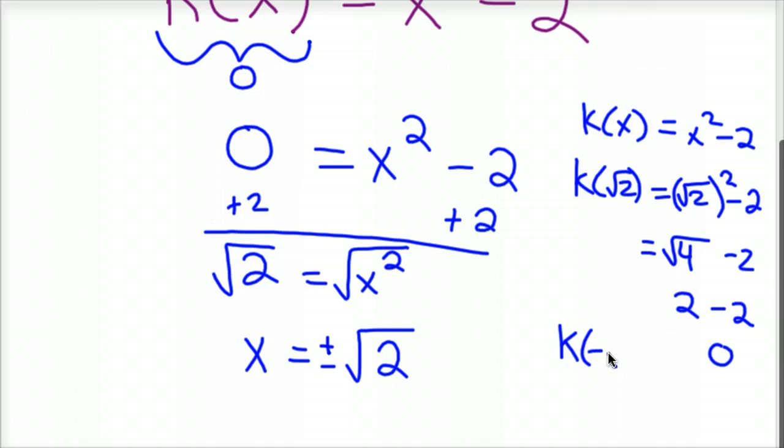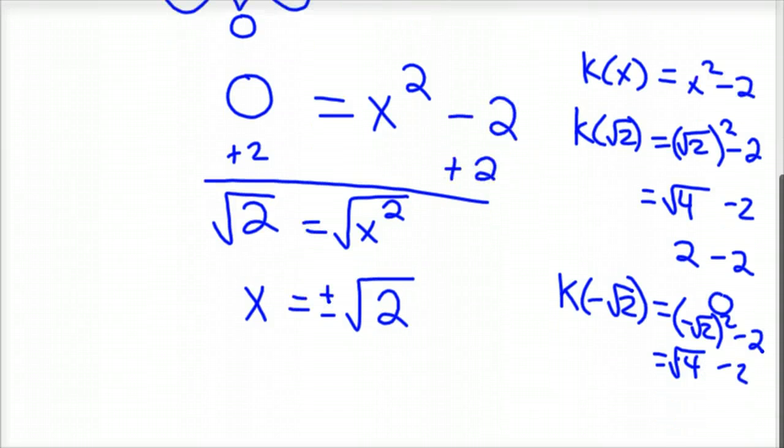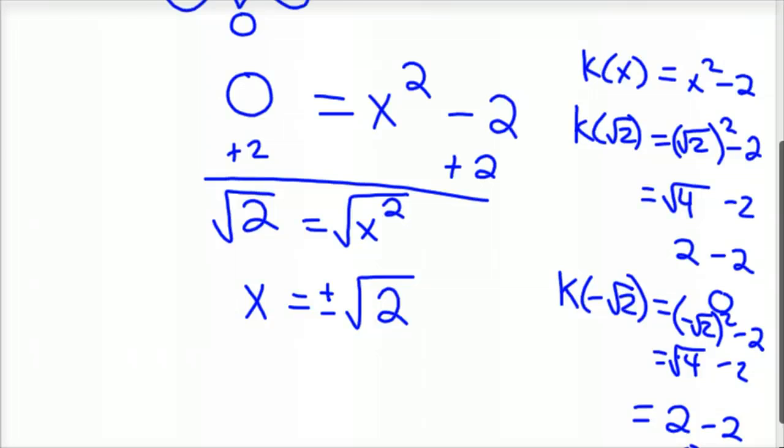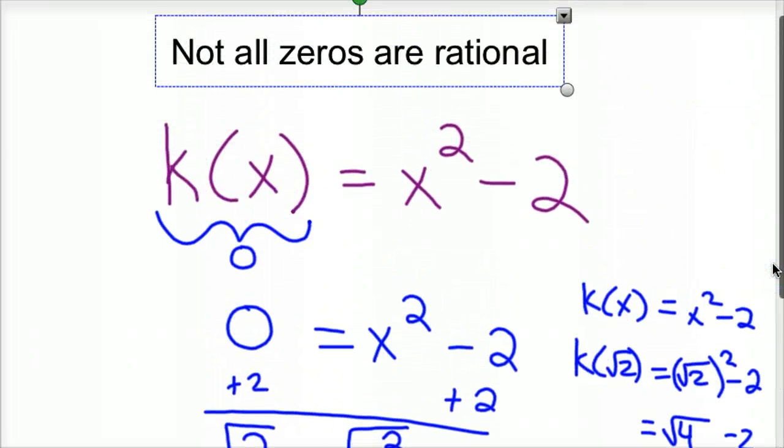The same with -√2. If you did k(-√2), that would be (-√2)² - 2. A negative times a negative, because you've got √2, that's positive. So this would just be, again, the positive square root of 4 minus 2. You get the exact same thing again. You get 2 - 2, which is 0. So those are the two zeros.